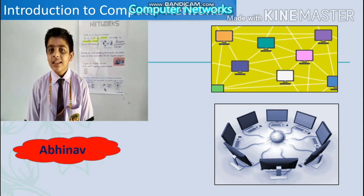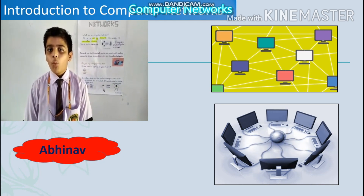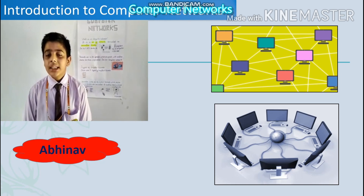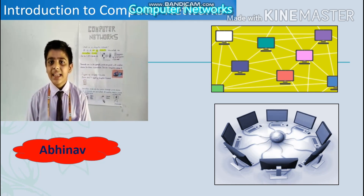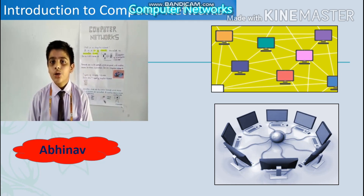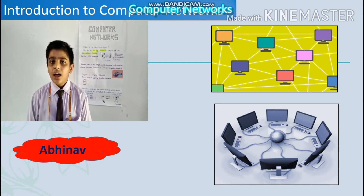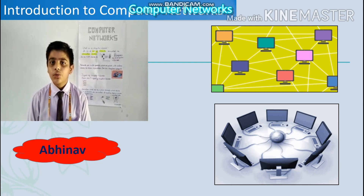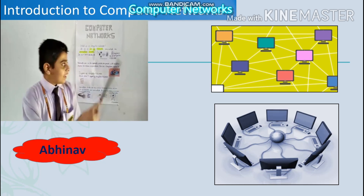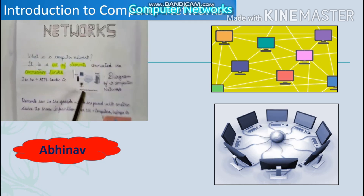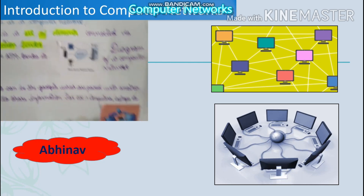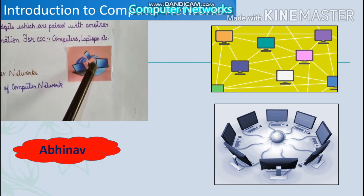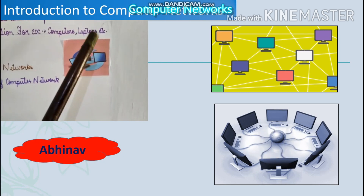Now the question arises: what is a set of elements and what are connection links? Set of elements are the gadgets which get connected to other devices to share information, and connection links are the mediums through which devices get connected to share information. Here you can see that different devices are connected to a server or a switch.